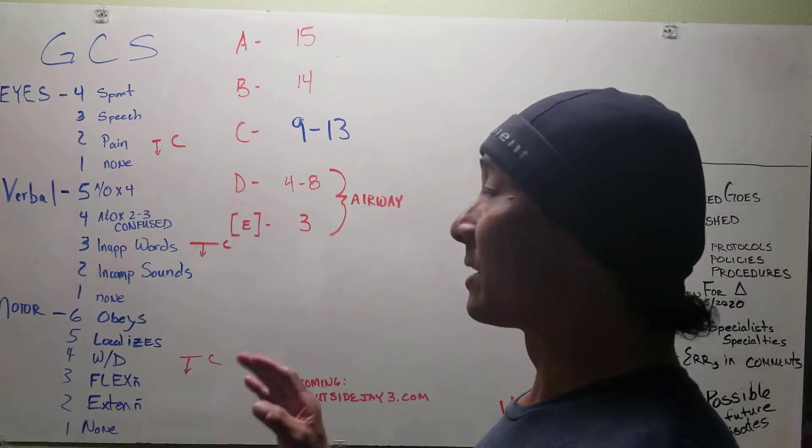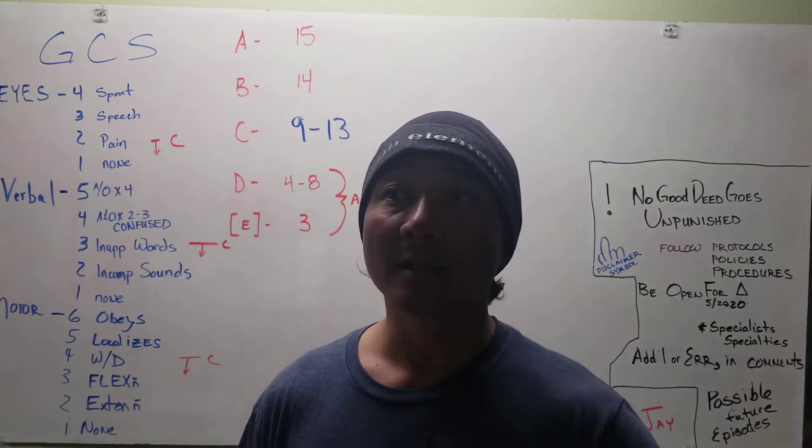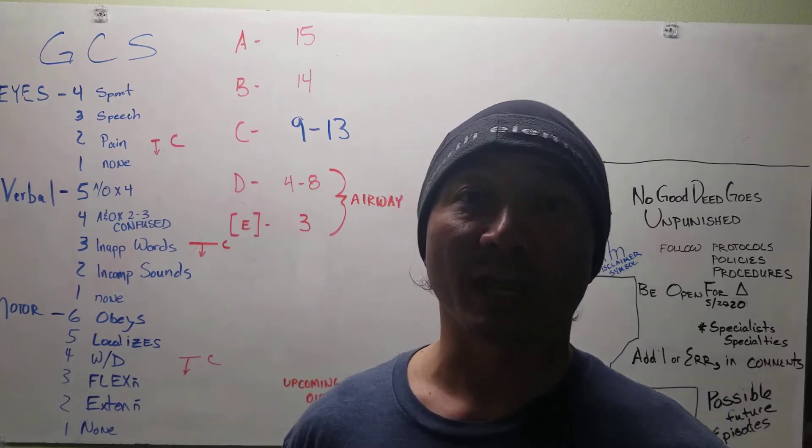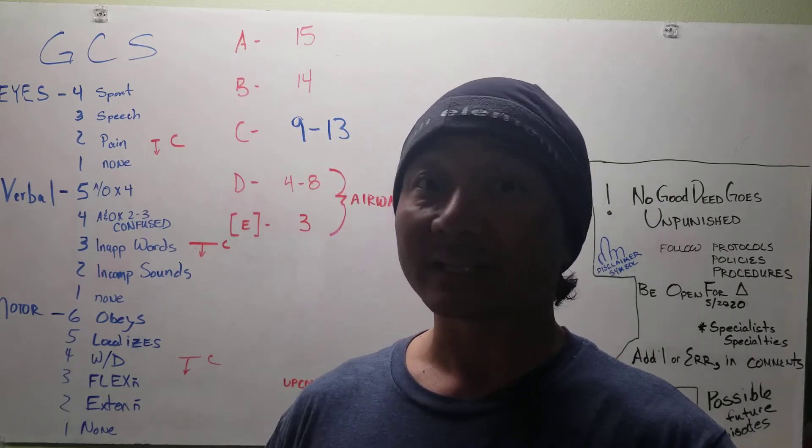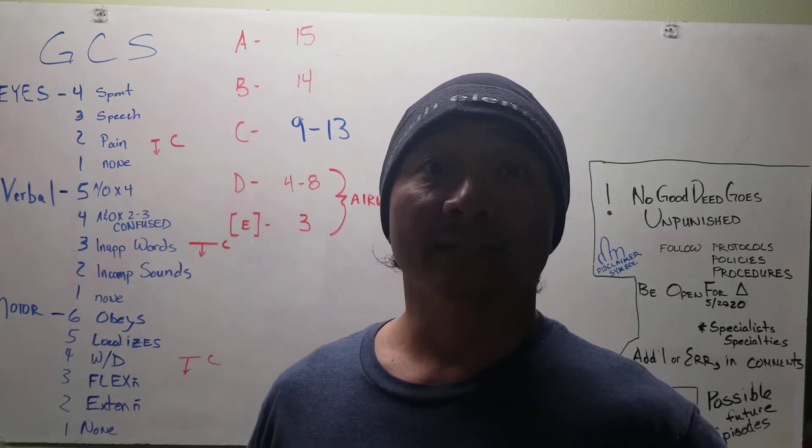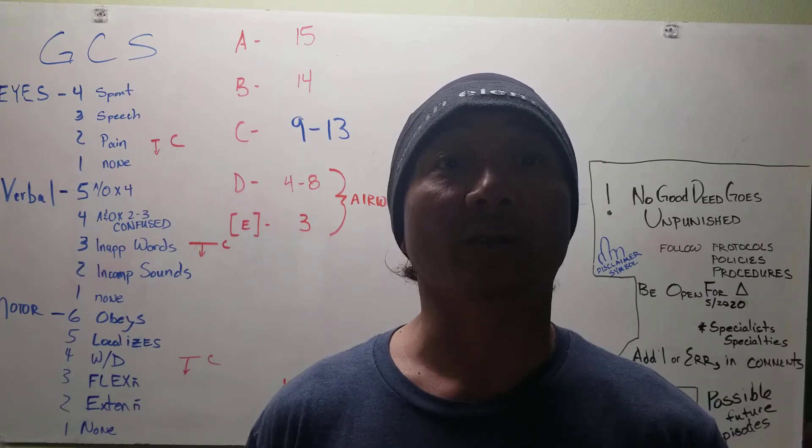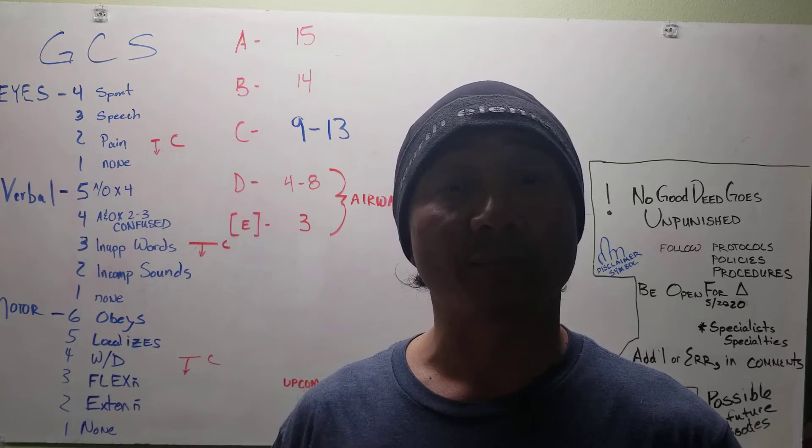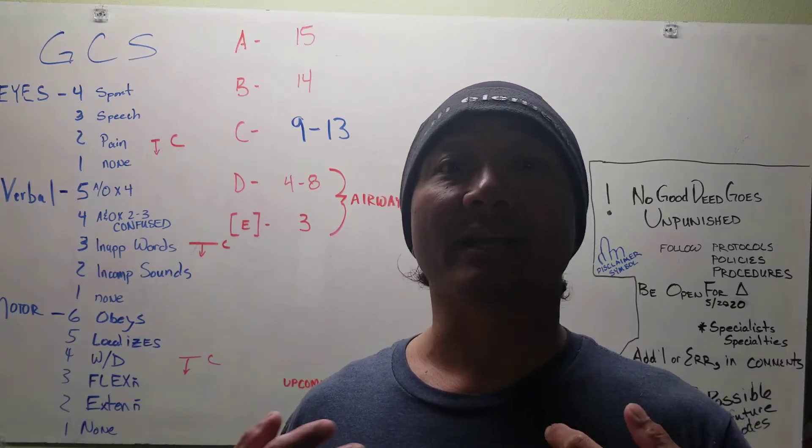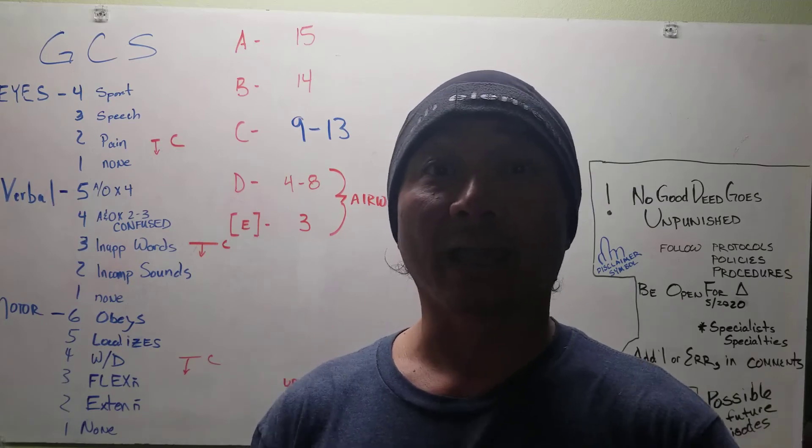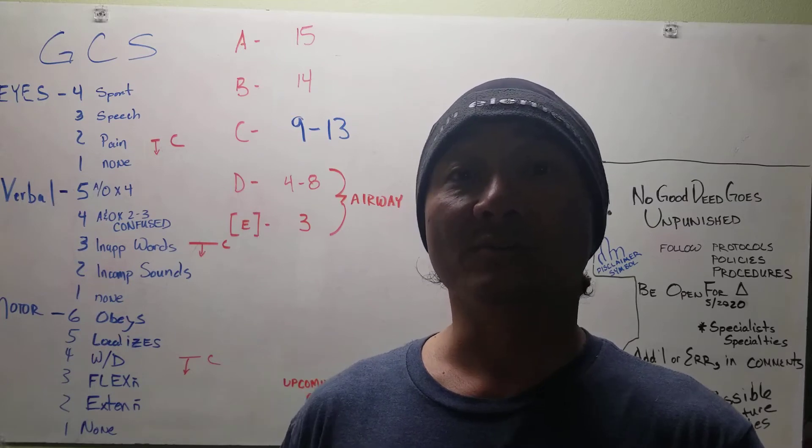The GCS scale was invented in 1974 for post-operative patients in the ICU with head trauma. It hasn't changed since then. Somewhere somehow it got involved into the pre-hospital setting and we are currently using it for head trauma patients in the ICU setting, and now we're kind of using it on every patient, both medical and trauma patients.